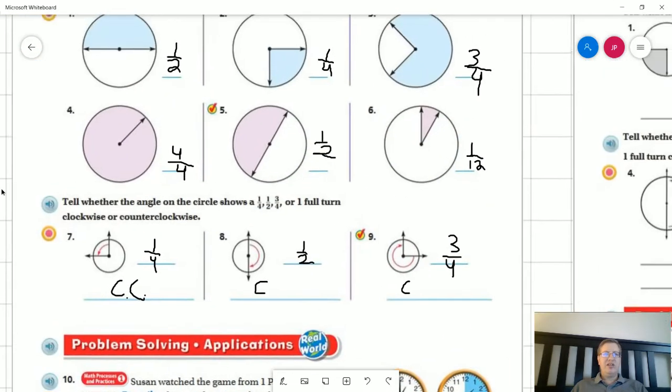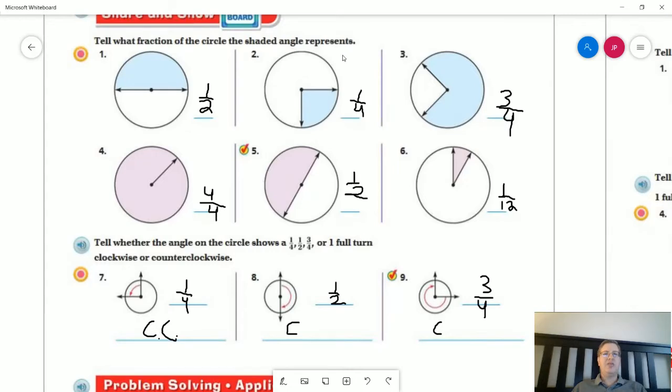So moving on to the share and show problems. If you want to pause the video and take a look at these, I'm just going to kind of relate the ones I asked you guys to do. So we are just figuring out what the amount of the shape is. So the blue part covers half of the shape for number one. It covers three quarters of the shape for number three. It covers half of the shape for number five.